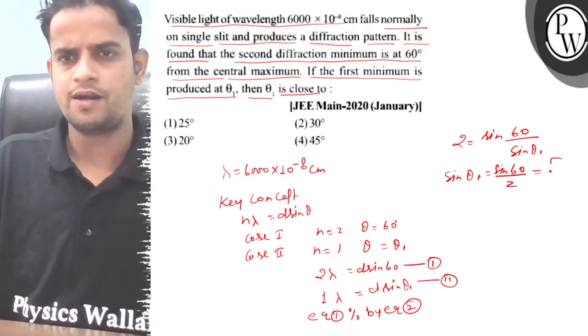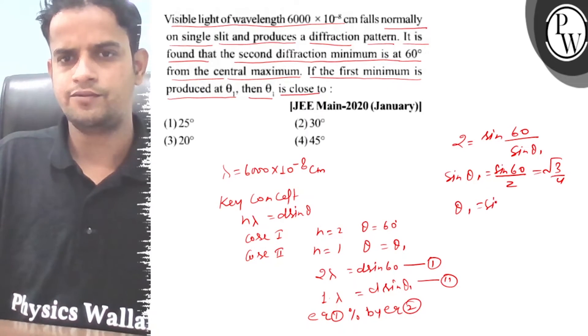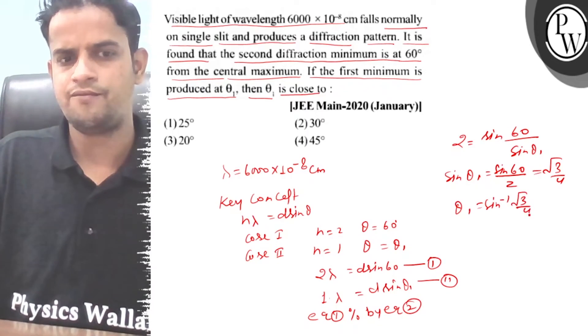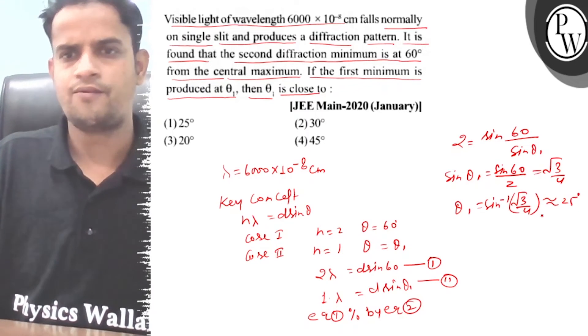That gives sinθ₁ = √3 / 4. So θ₁ = sin⁻¹(√3/4), which works out to approximately 25 degrees.